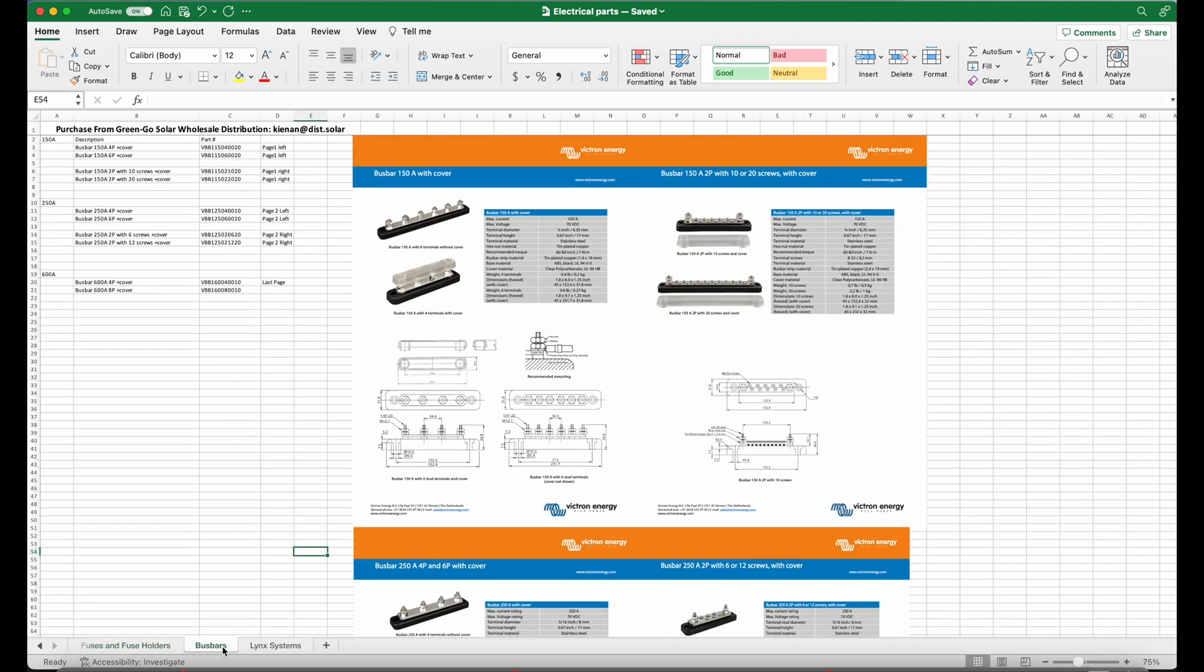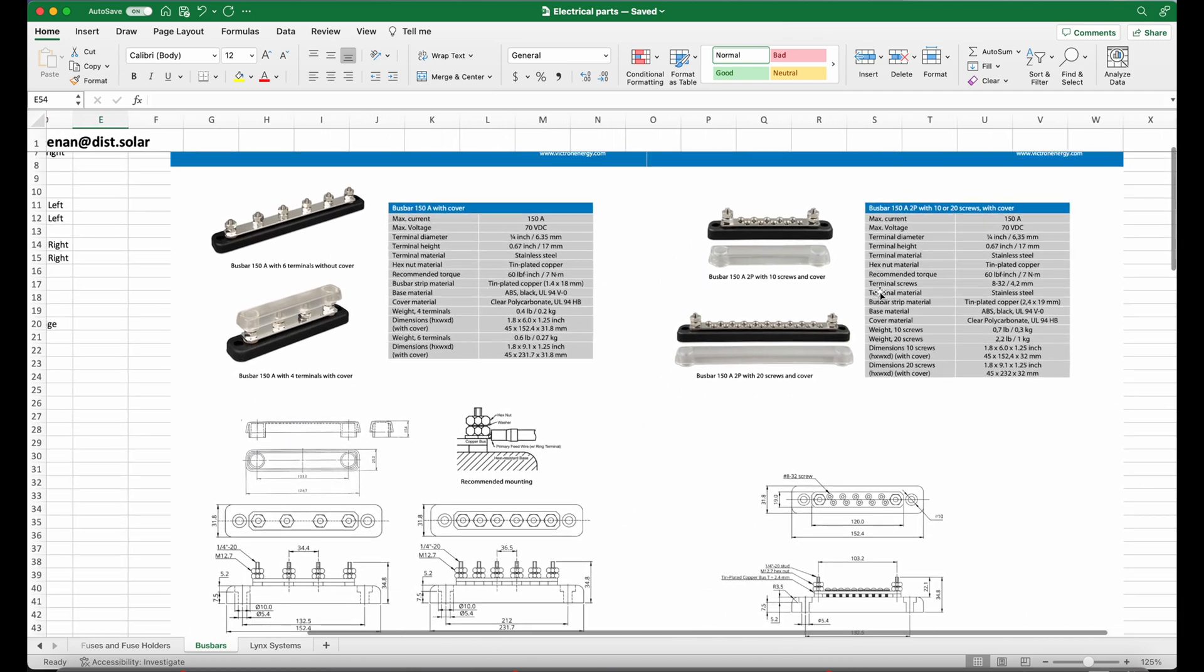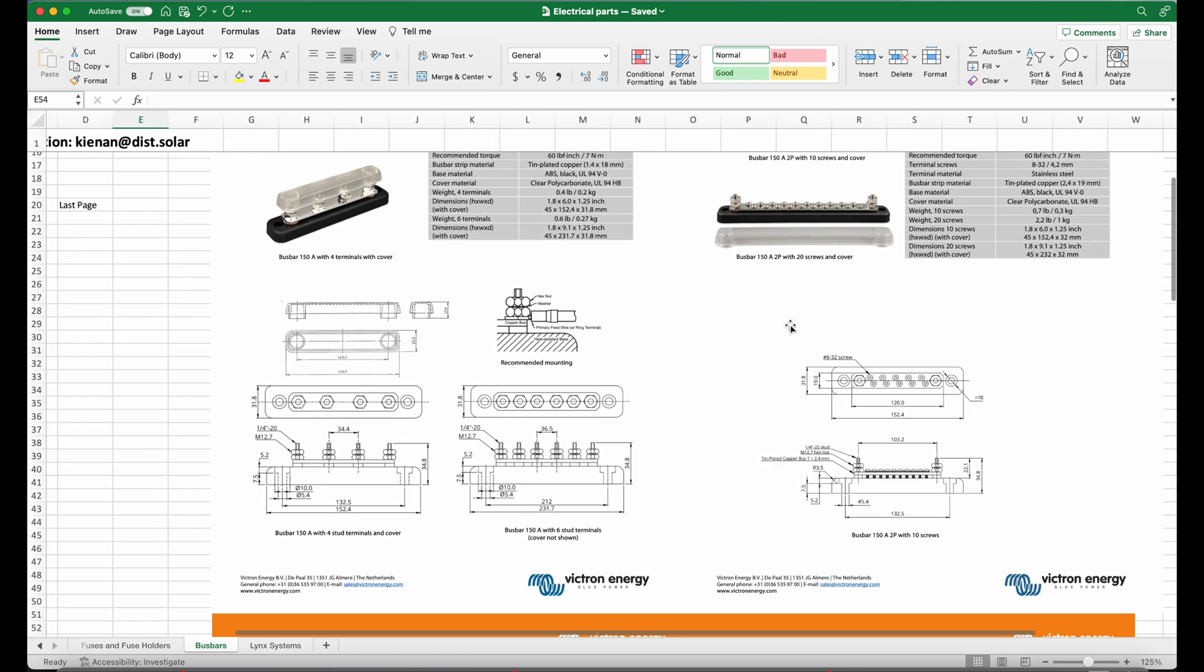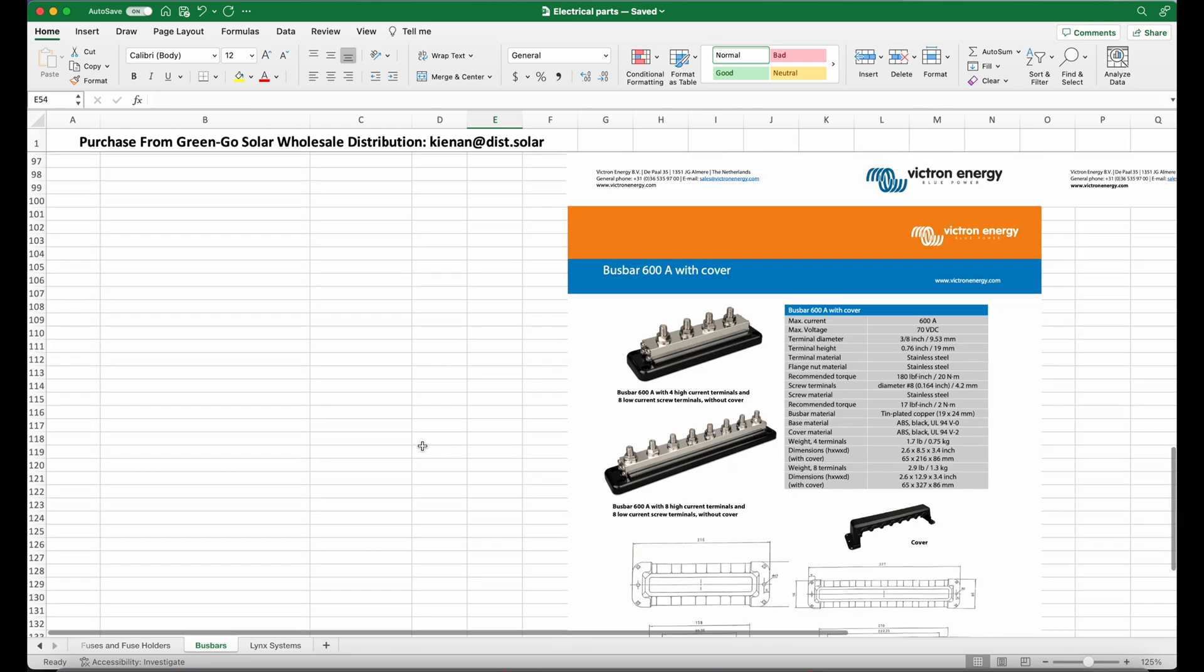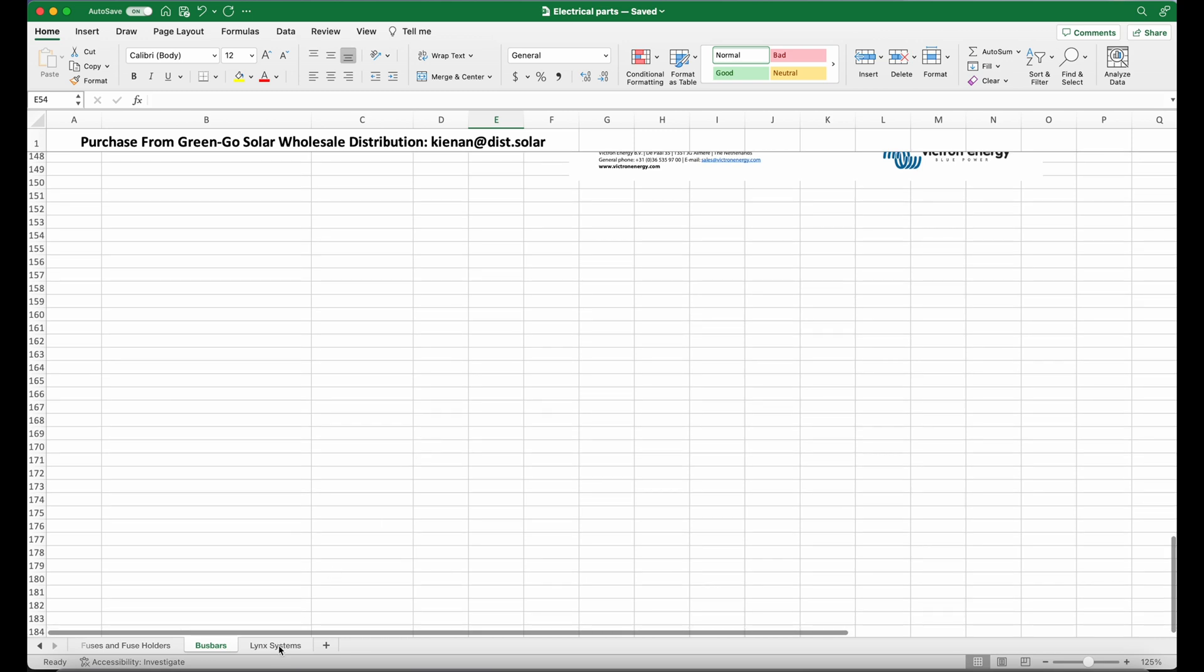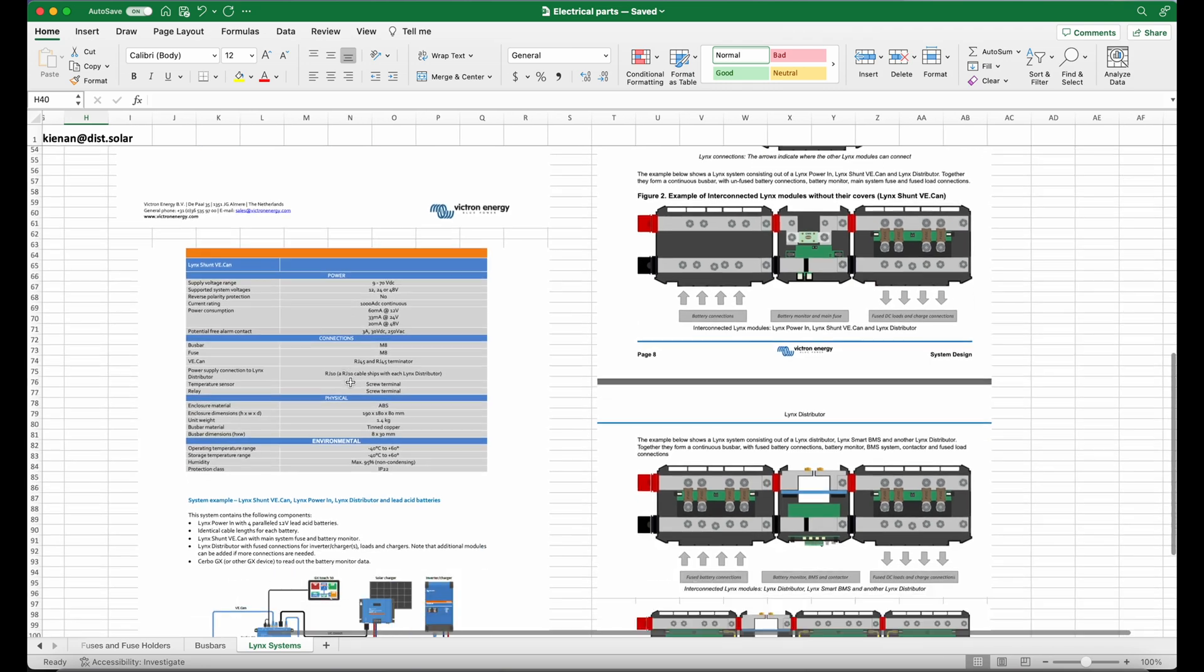And then here we also have the bus bars. So we have these bus bars that I showed you and also we have the data sheet for the bus bars that I didn't show you. And so you can see that we have on the left here we have all of the amperages, the descriptions, the part numbers, and where the data sheet is. And then we have the Lynx system page here shows all of the part numbers and a description of each one. And then it has all these data sheets and drawings here.